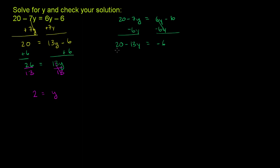And now I can subtract 20 from both sides to isolate the y's on the left-hand side. So I am subtracting 20 from both sides. I'm doing that to get rid of this 20. And so on the left-hand side, I have a negative 13y. And on the right-hand side, I have a negative 26.